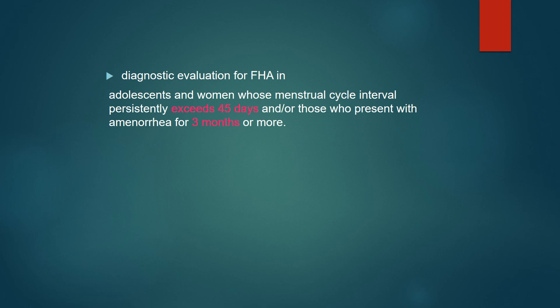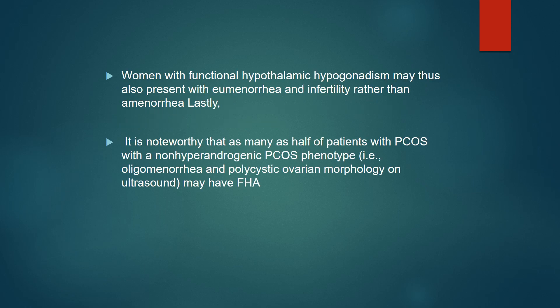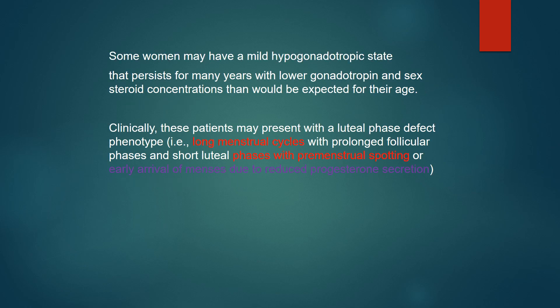Diagnostic evaluation for FHA applies to adolescents and women with menstrual cycle intervals that persistently exceed 45 days and those presenting with amenorrhea for 3 months or more. Women with functional hypothalamic hypogonadism may also present with infertility rather than amenorrhea. Some women may have a mild hypogonadotropic state that persists for many years, with lower gonadotropic and sex steroid concentrations than would be expected for their age.